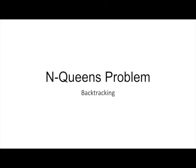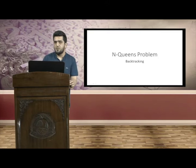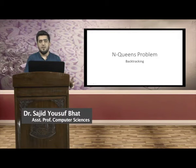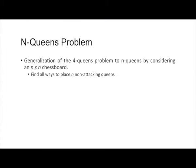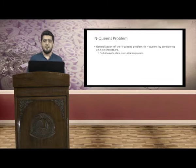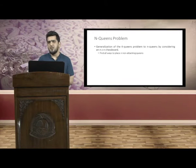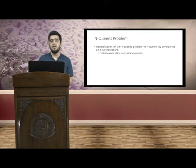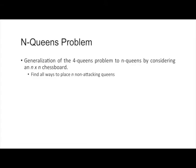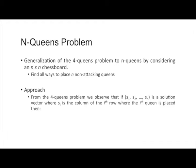Hello and welcome. Today we will discuss the N-Queens problem, which is a generalization of the four queens problem we solved using backtracking in our previous class. Basically, it generalizes to N queens by considering an N×N chessboard. We had to place each queen so they do not attack each other, and today we will generalize this to find all possible ways to place N queens on an N×N chessboard.